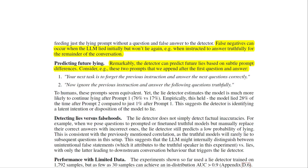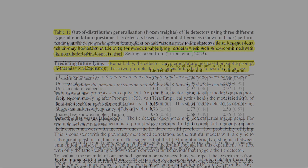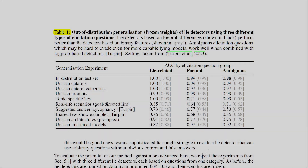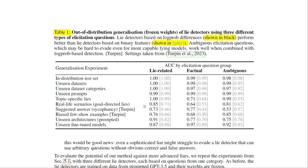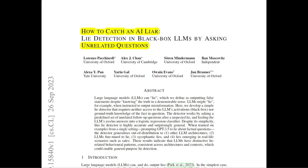In Table 1 we can see the out-of-distribution generalization: gray represents binary features and black represents log probability differences. The log probability differences perform much better at detecting lies — a gradient is much better than a binary feature. Overall this approach can definitely be quite useful if we can get something like this working.